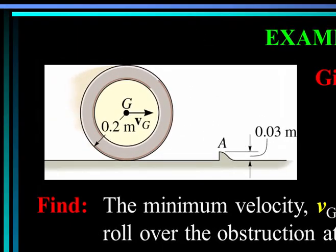Here we have a 10 kg wheel with moment of inertia about G of 0.156 kg·m². It rolls without slipping, and when it hits point A it does not rebound. Find the minimum velocity V_G the wheel must have to just roll over the obstruction at A. Since no slipping or rebounding occurs, the wheel pivots about point A. The force at A is much greater than the weight, and since the time of impact is very short, the weight is considered non-impulsive. The reaction force at A is eliminated by applying conservation of angular momentum about point A.